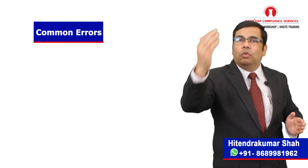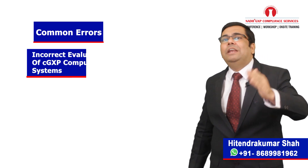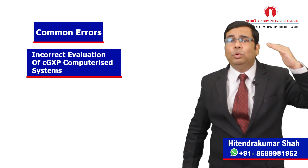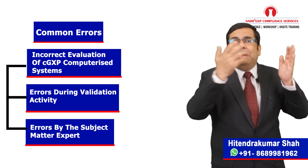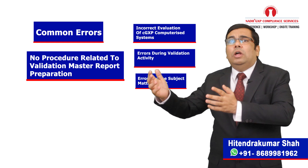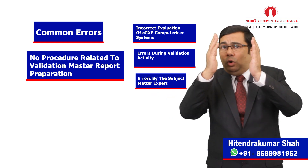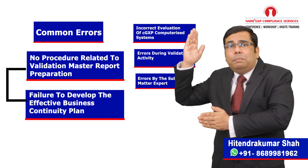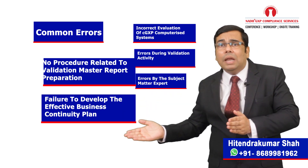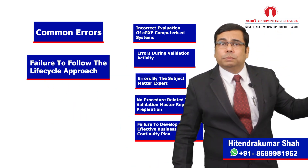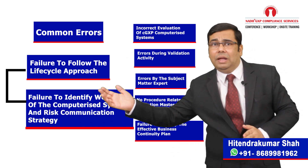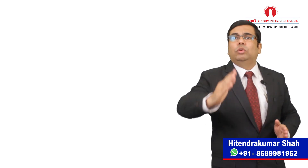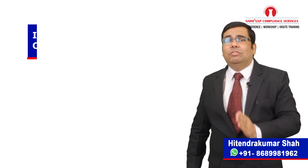Just a quick recap. The common errors made by firms with respect to computerized systems are: incorrect evaluation of GxP computerized systems; errors during validation activity; errors made by subject matter experts; no procedure for validation master report preparation; failure to develop an effective business continuity plan; failure to follow the life cycle approach; and failure to address weaknesses of computerized systems. Hope you understood these common errors related to computerized systems.